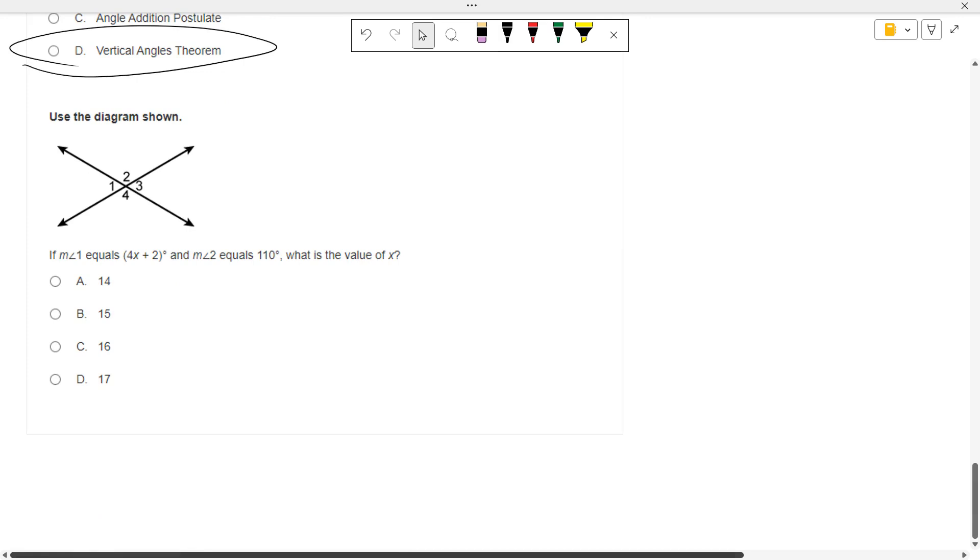Also using that diagram. Angle 1 and 2. What do we know about angles 1 and 2? They're linear pairs, so they're supplementary, so they add up to 180. 4X plus 2 plus 110 equals 180. So 4X plus 112.